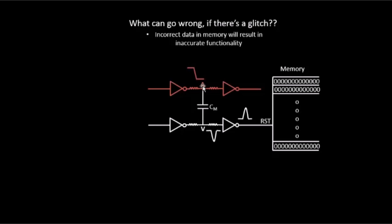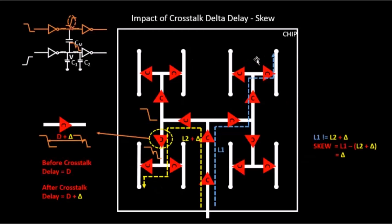Now what happens if the victim itself was switching and the aggressor is also switching? Let's say this is the clock tree we've built. This is the clock port, and there are two flops. We built the clock tree so that the latency from the clock port to flop one is L1, and the latency from the clock port to flop two is L2. Before crosstalk, we built the clock tree such that L1 equals L2 — that's zero skew.